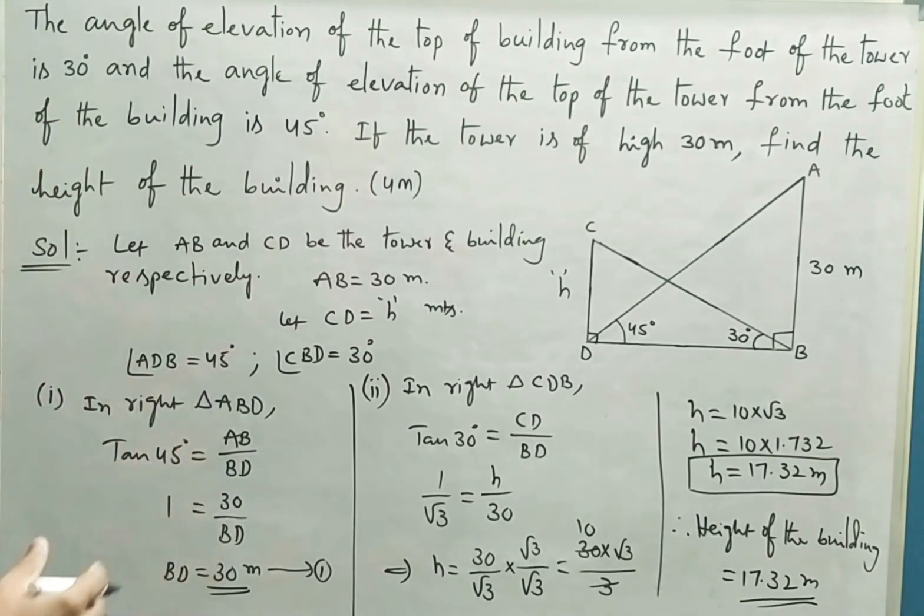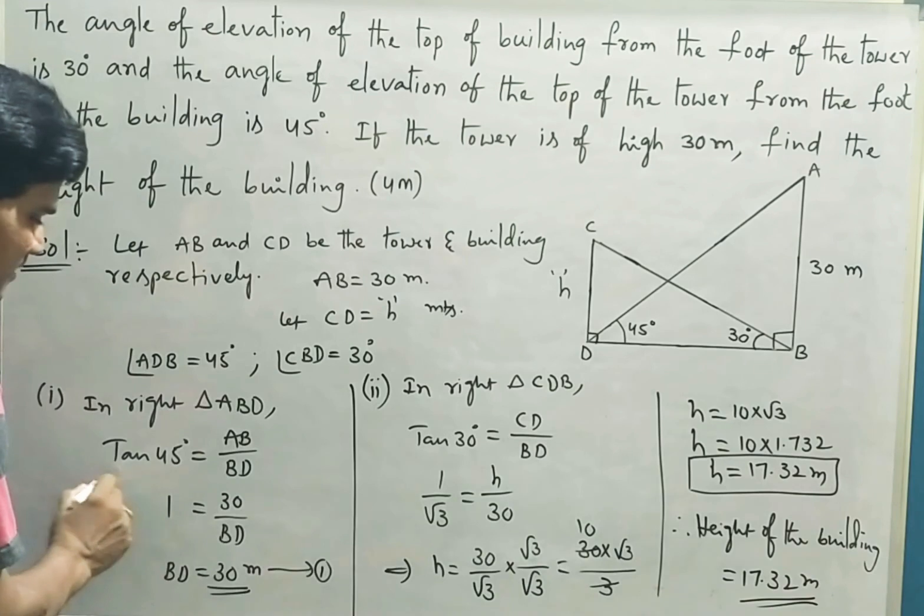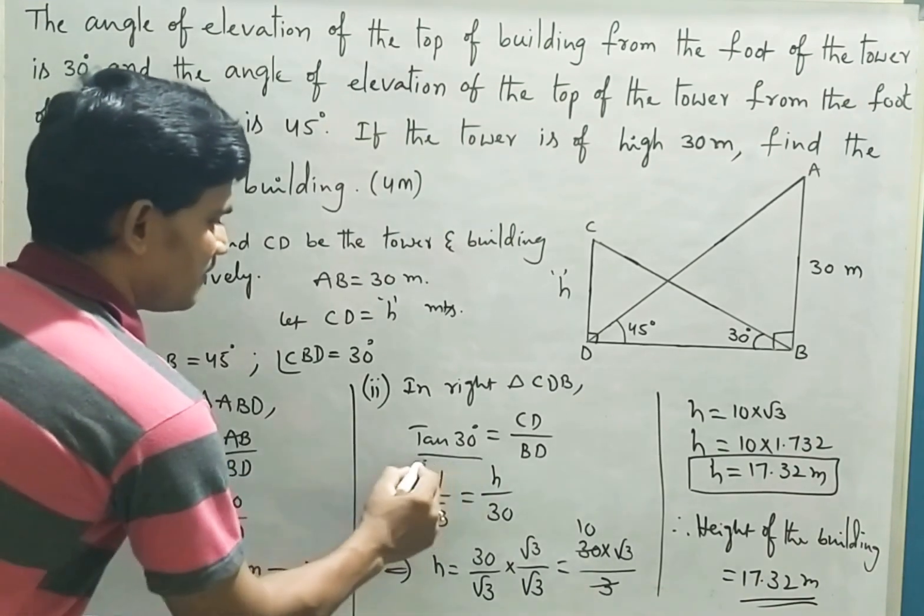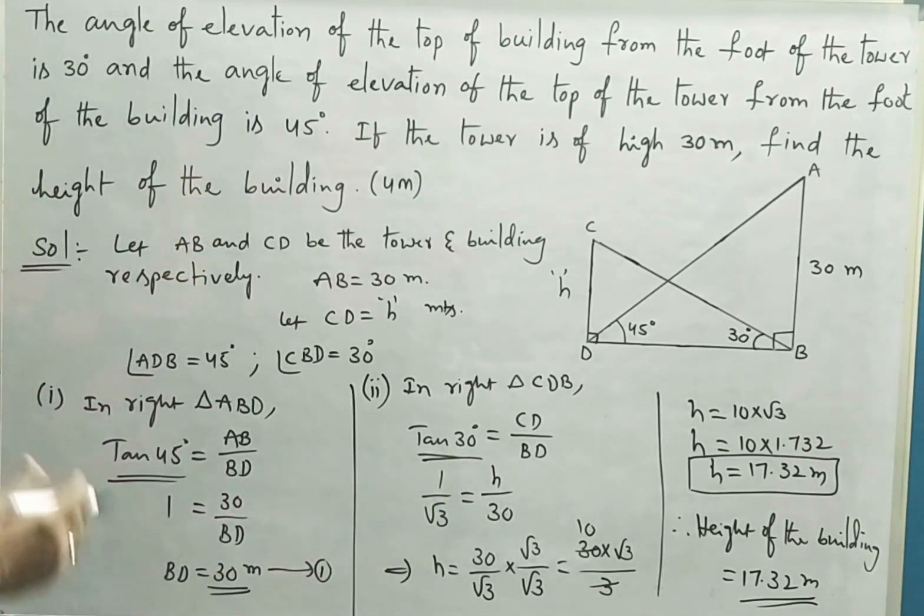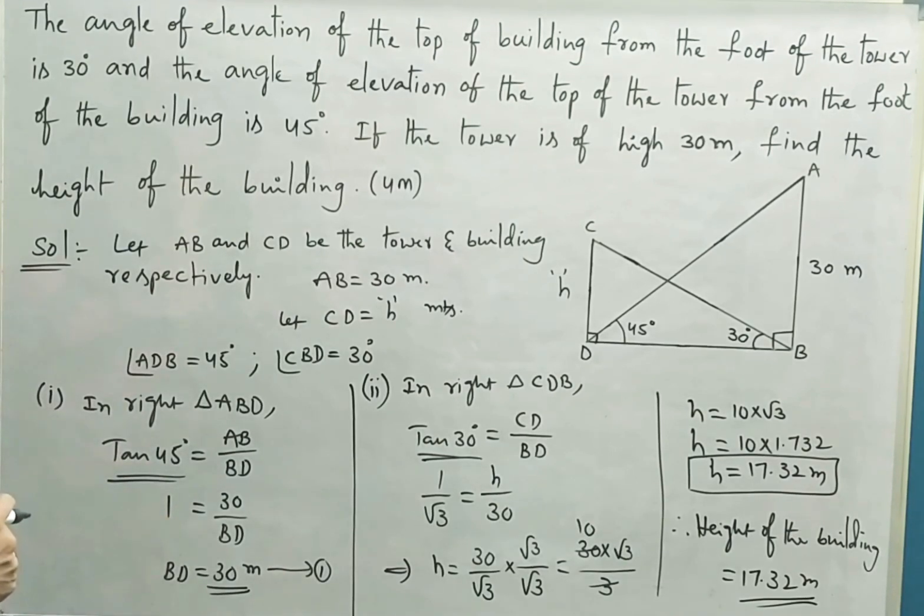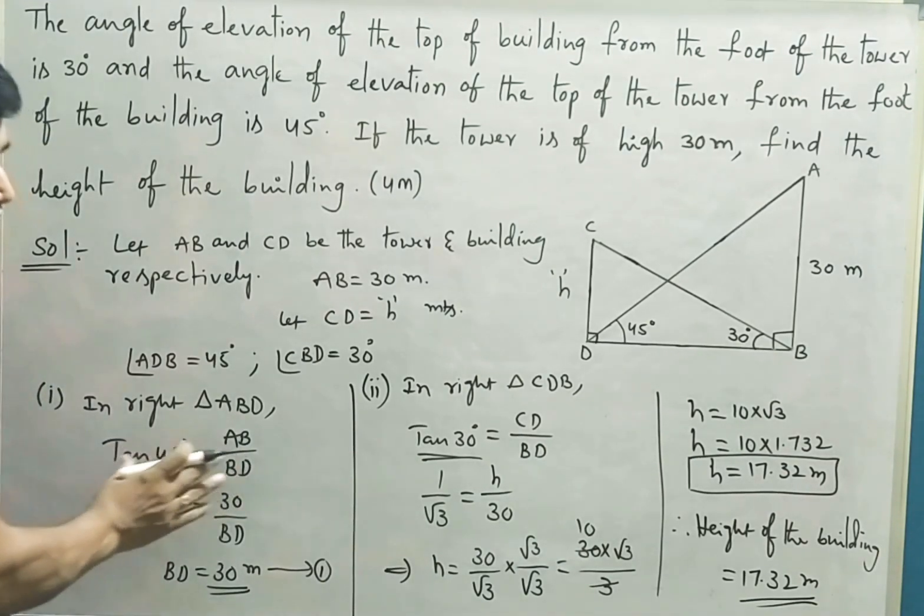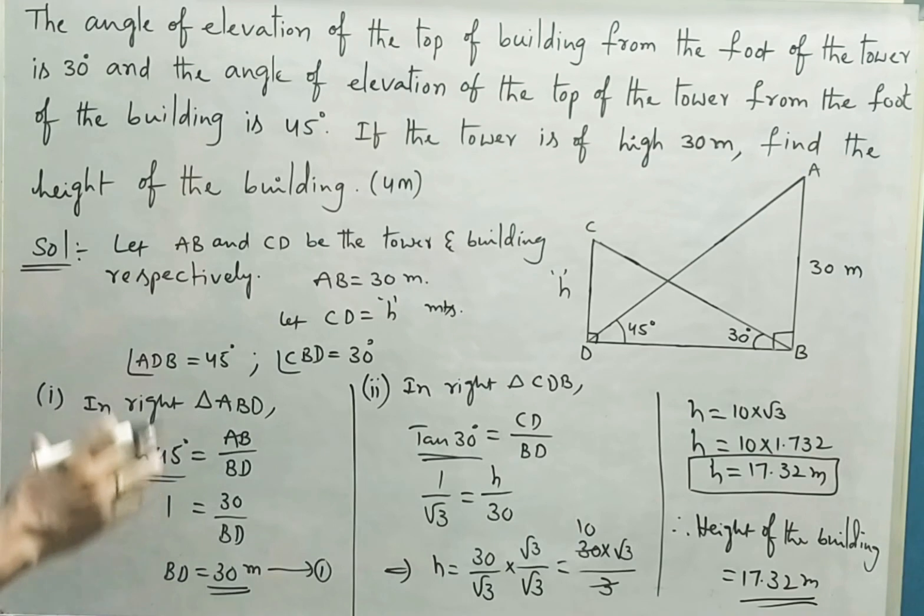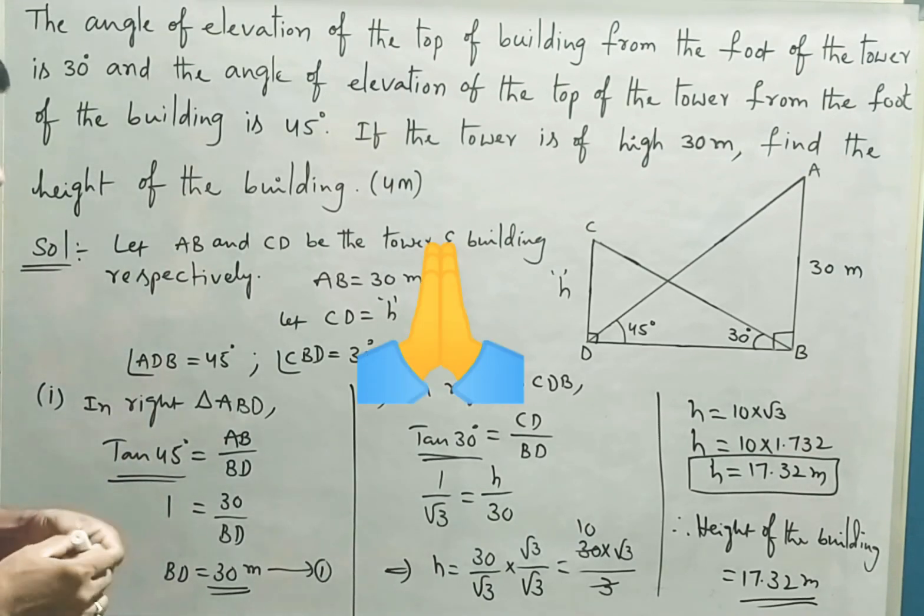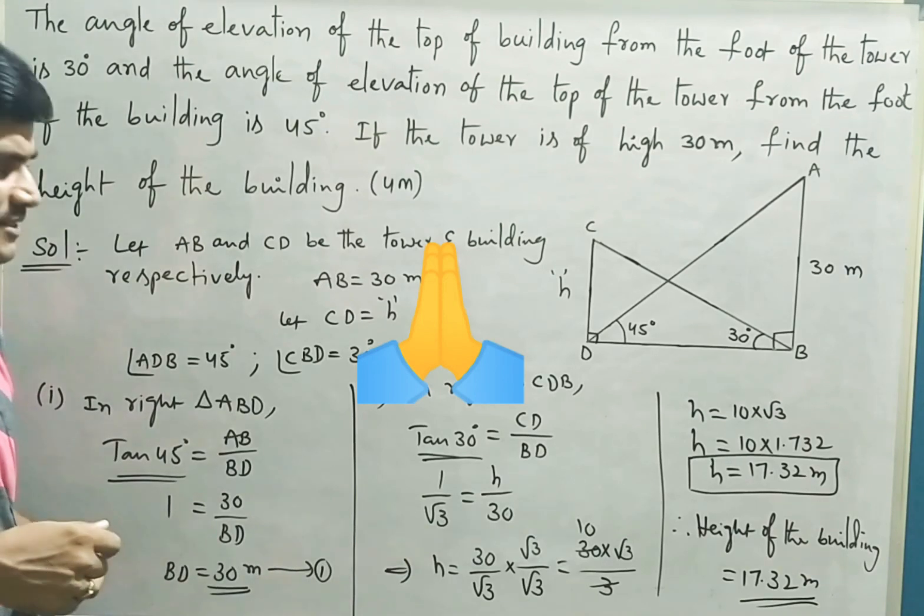See, in most cases in finding heights and distances, we use tan ratios. So you must be aware of the values of 30 degrees, 45 degrees, 60 degrees. If you have the knowledge of taking the tan ratios, almost the problem is done. So this is how we will find the height of the building. Thank you, I hope you understand.